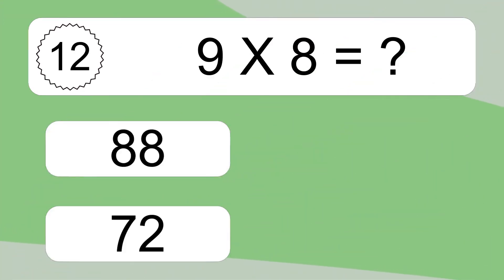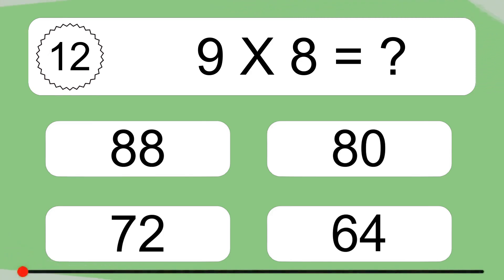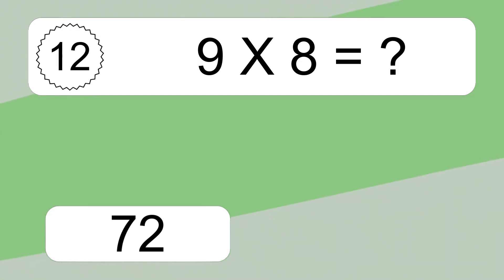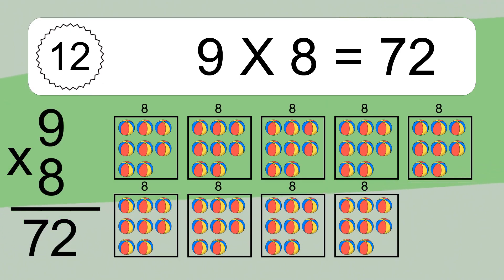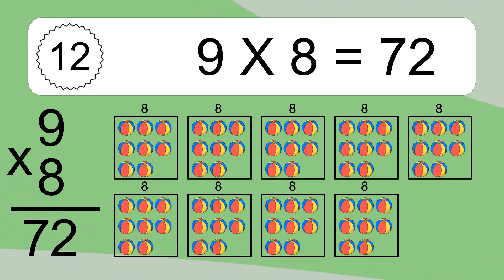9 times 8 equals what? 9 times 8 equals 72. We have 9 boxes, and each box has 8 colorful balls inside. If you count all the balls in all the boxes together, you will have 9 times 8 balls. This equals 72 balls.